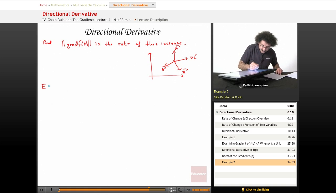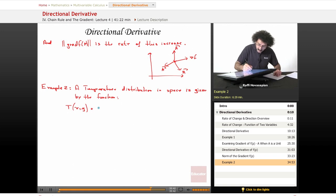Let's go ahead and do an example. Example two. A temperature distribution in space is given by the function T(x,y) equals 12 plus 4 cosine x cosine y plus 9 cosine 2x. So a temperature distribution in space is given by the function, this thing right here.